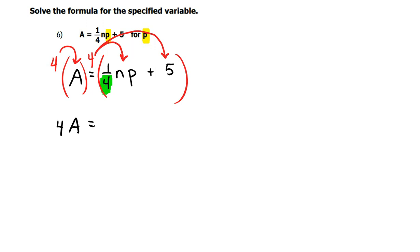Now on the four times the one over four NP, your fours just cancel out. And you're just left with one NP. But one times NP is just NP.